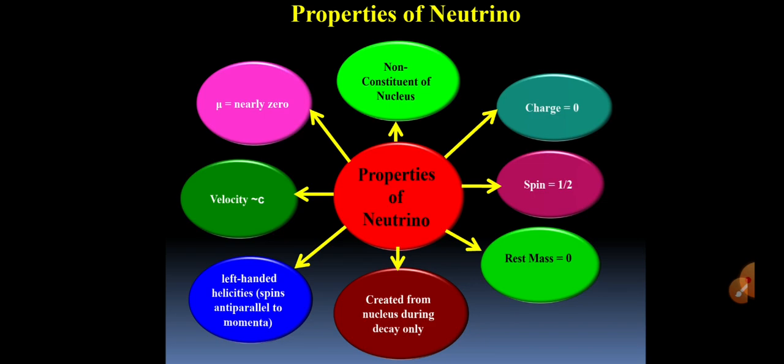Charge of neutrino is zero. And spin of neutrino is half. Rest mass of neutrino is zero. It is created from nucleus only during beta decay. It has left-handed helicity, spins anti-parallel to momenta, and velocity is approximately equal to velocity of light. And its magnetic moment is nearly equal to zero.